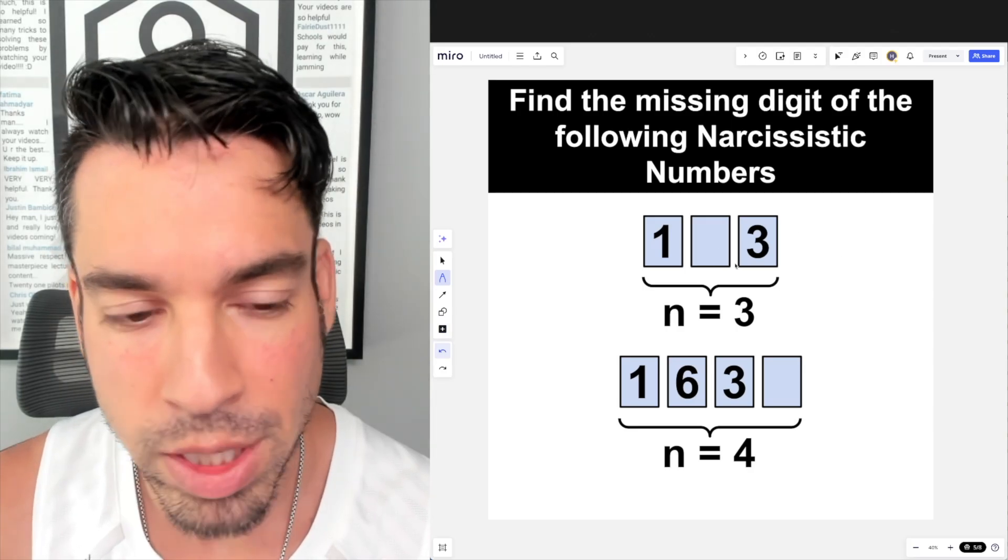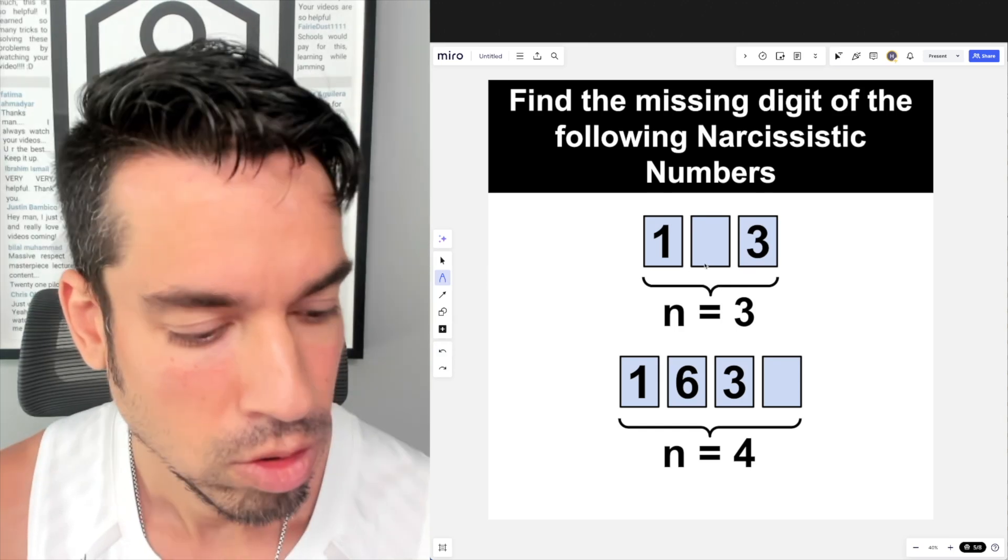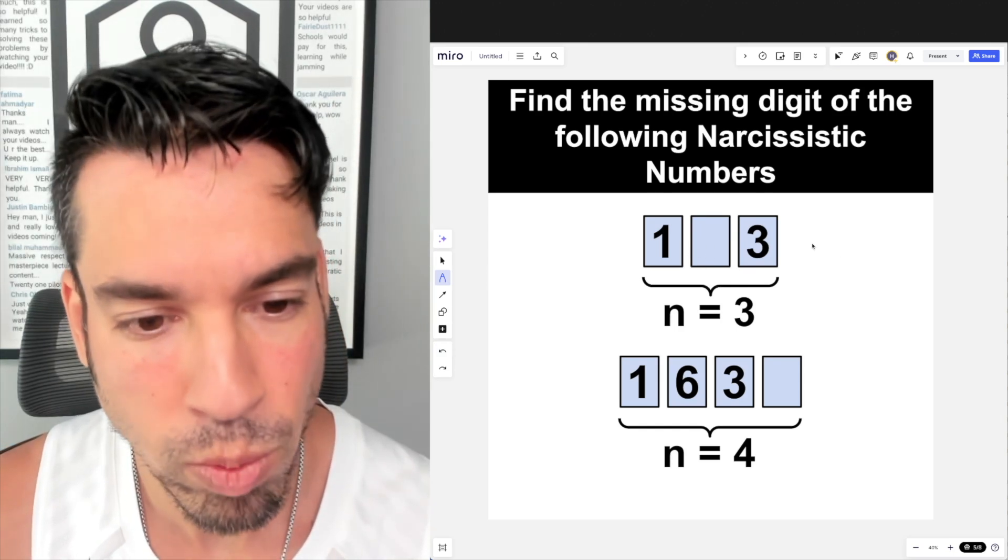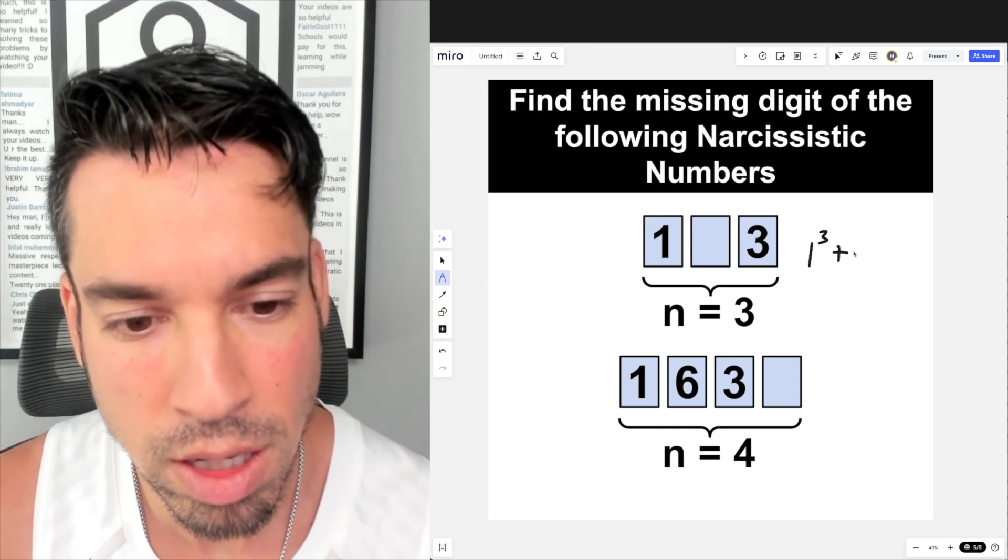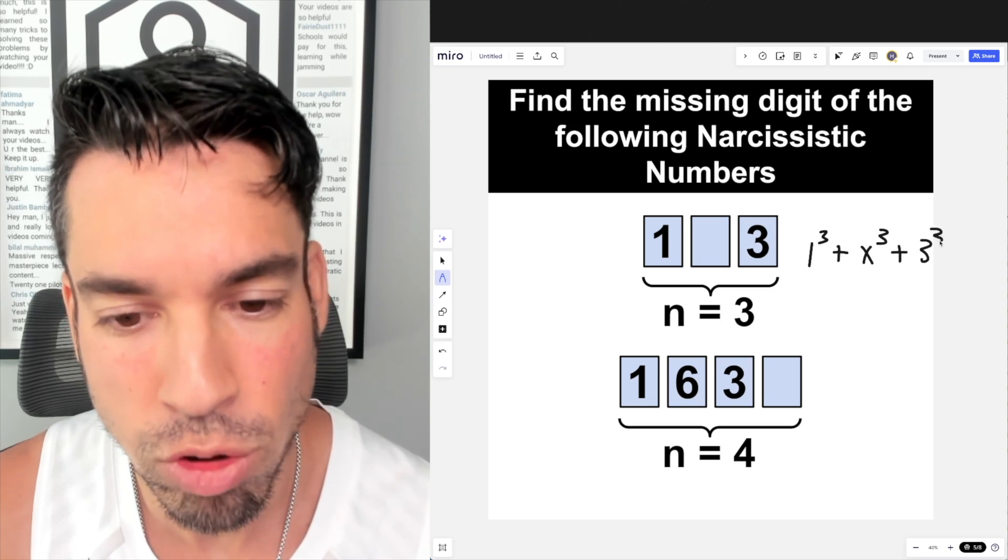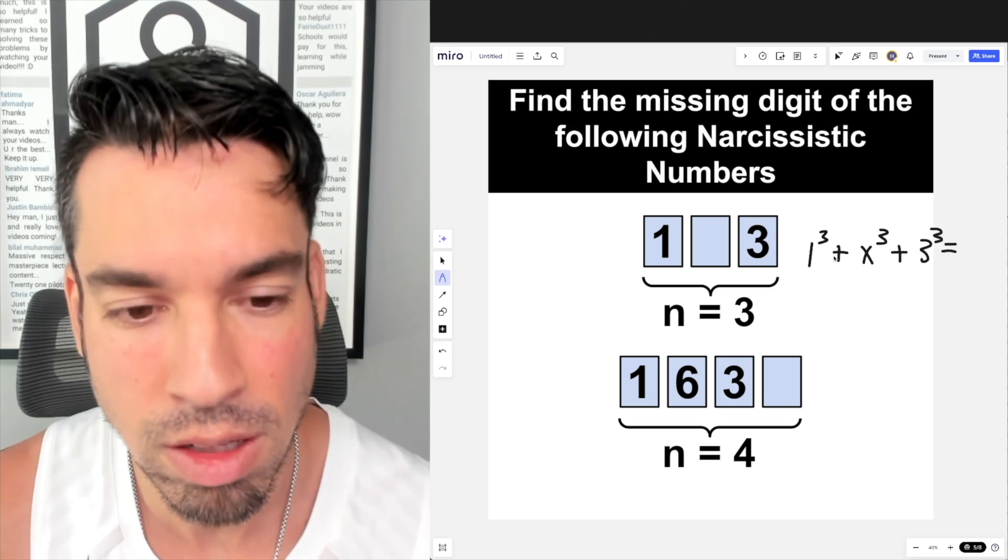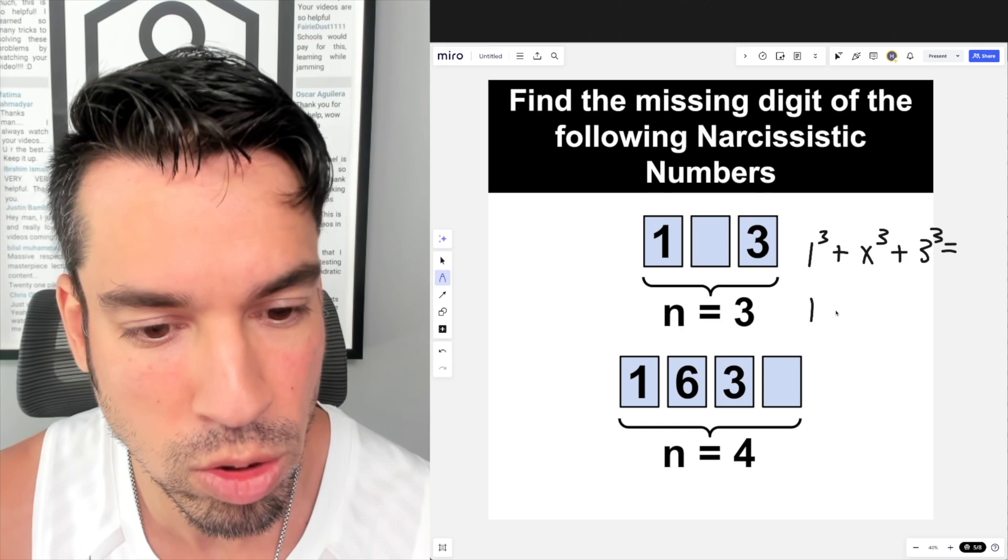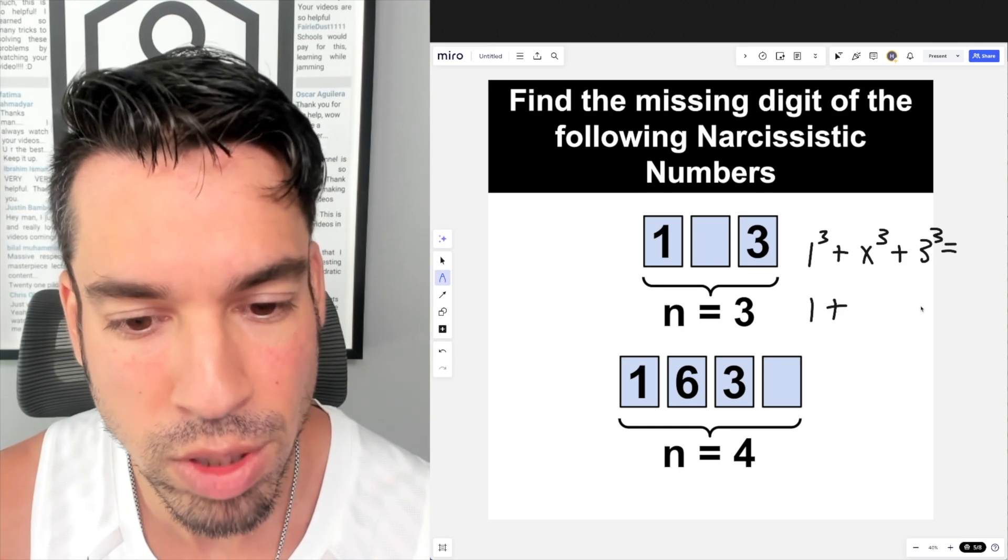Alright, so let's figure out this three-digit number first and this missing digit right here. In order for this to be a narcissistic number, we need to say 1³ + some unknown value cubed + 3³ has to equal the number itself.